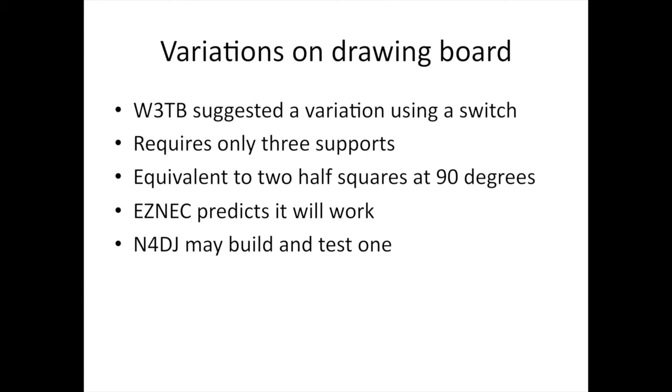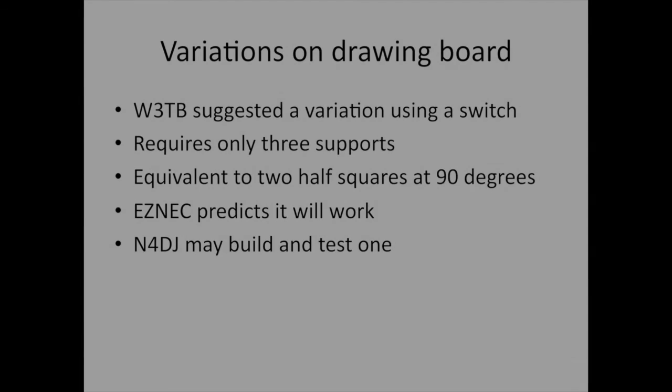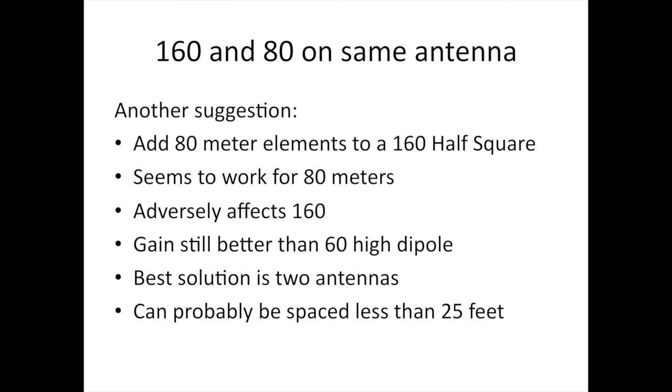There are some variations of this antenna on the drawing board. My friend W3TB suggested a variation using a switch, which would require only three supports for getting four directions. It would be equivalent to two half squares at 90 degrees. EZNEC predicts it will work. I haven't had time to build and try one yet.